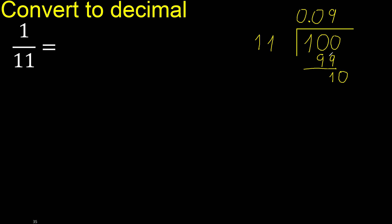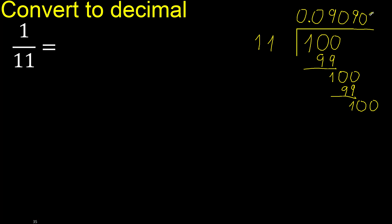Point is here — 0 point. 10 is less, so complete with 0. Two zeros, therefore point 0. 11 multiply by 9 is 99, subtract is 1. Complete with 0. 100 again — 11 multiply by 9 is 99, subtract is 1. Complete — 0, 0.